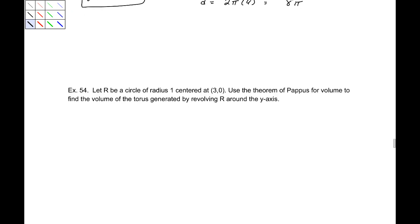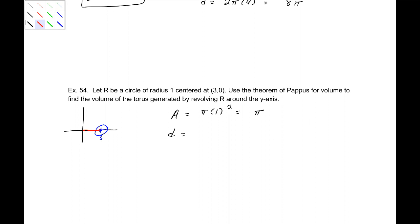For a circle of radius 1 centered at (3, 0): its area is π·1² = π, and the distance traveled by the centroid is 2π·3 = 6π. By the Theorem of Pappus, the volume is π · 6π = 6π². That concludes this section — make sure you go back and review everything covered here.